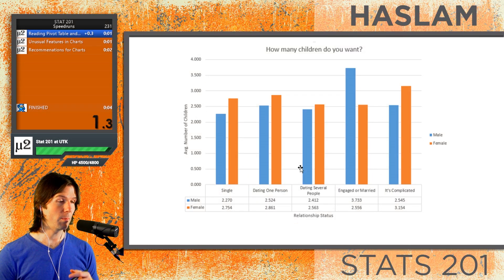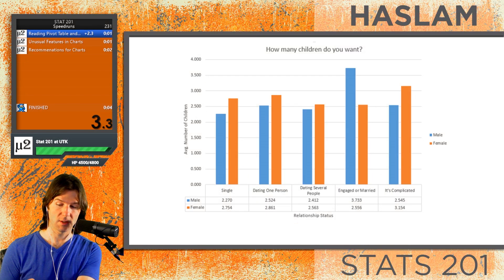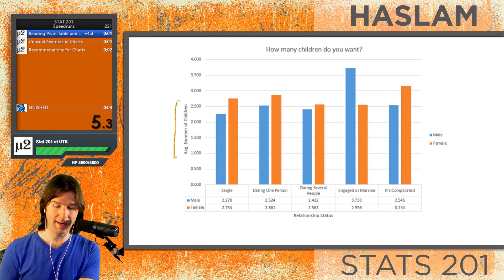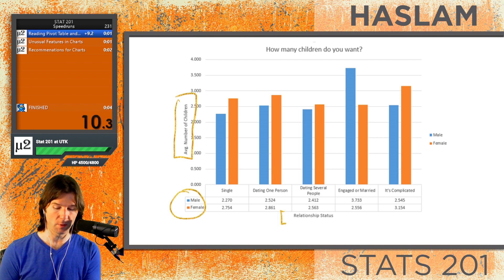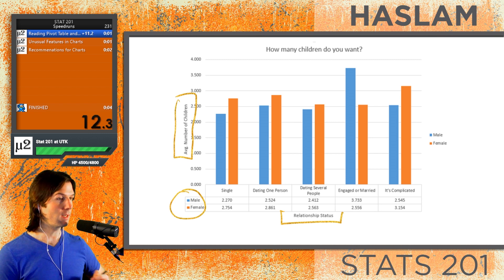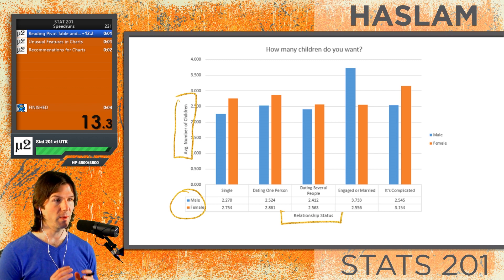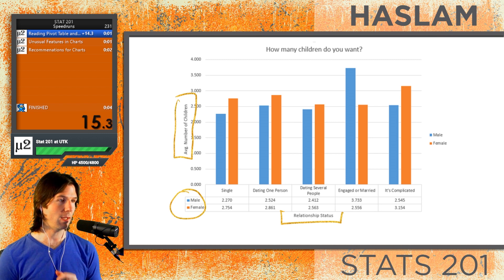The first thing you want to do with any pivot chart is look for its context. We're analyzing the average number of children people plan on having based on whether or not they are male or female and their relationship status. This is the context for this pivot chart, and all data needs context.